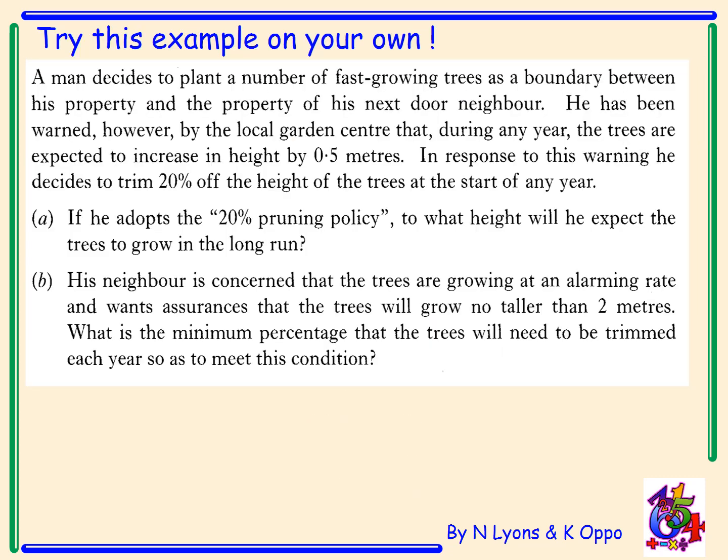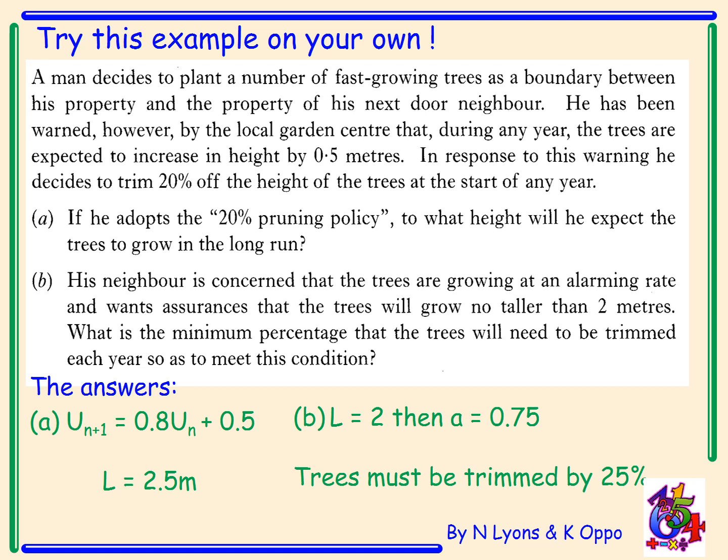Now try this example on your own — please pause the video. The answers: for part a, the recurrence relation is u_(n+1) = 0.8·u_n + 0.5, and the sequence tends to a limit of 2.5 metres. For part b, if the limit is going to be 2, then a must equal 0.75, which means the trees must be trimmed by 25%.